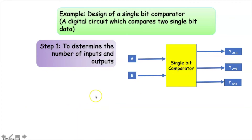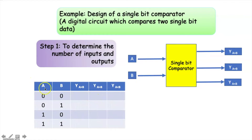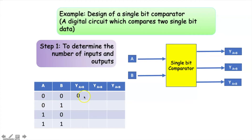Now let us try to represent this single-bit comparator in a truth table. Here all the inputs and outputs are represented, and all possible combinations of the inputs are given. For the first case, when A equals 0 and B equals 0, the valid condition is A equal to B. So the output for A greater than B should be 0, the output for A equal to B should be 1, and the output for A less than B should be 0.